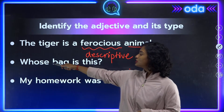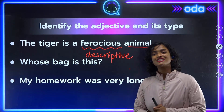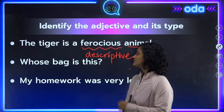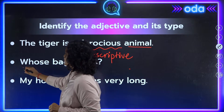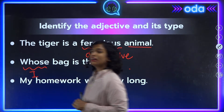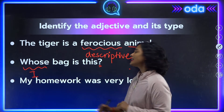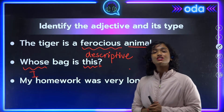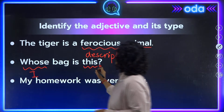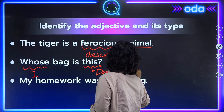Number two: 'Whose bag is this?' Can you identify the adjectives and their types? Here we have two adjectives. First, 'whose' — this is an interrogative adjective used to ask a question. Second, 'this' — it points out which specific bag we are talking about, so this is a demonstrative adjective.